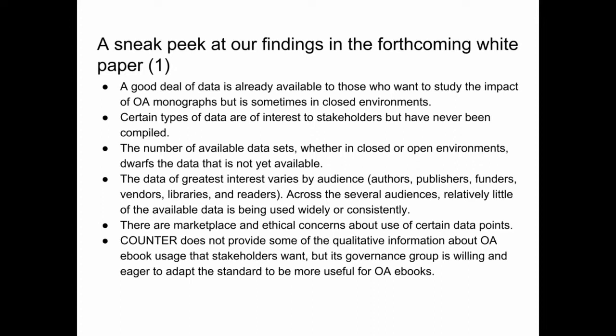I want to share a sneak peek at our findings in this forthcoming white paper. First, a good deal of data is already available to those who want to study the impact of open access monographs, but it's sometimes held in closed environments. There are certain types of data of interest to stakeholders that, as far as we know, have never been compiled. And yet the number of available datasets — whether in open or closed environments — dwarfs the data that is not yet available. The data of greatest interest seems to vary by audience: authors, publishers, funders, vendors, social platforms, libraries, readers. Across these audiences, relatively little of the available data is being used widely or consistently.